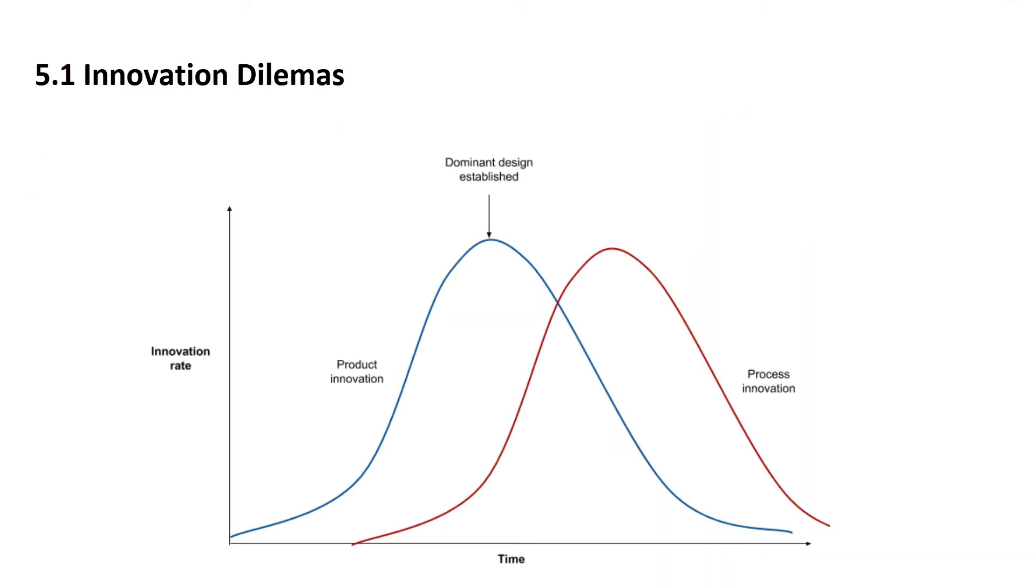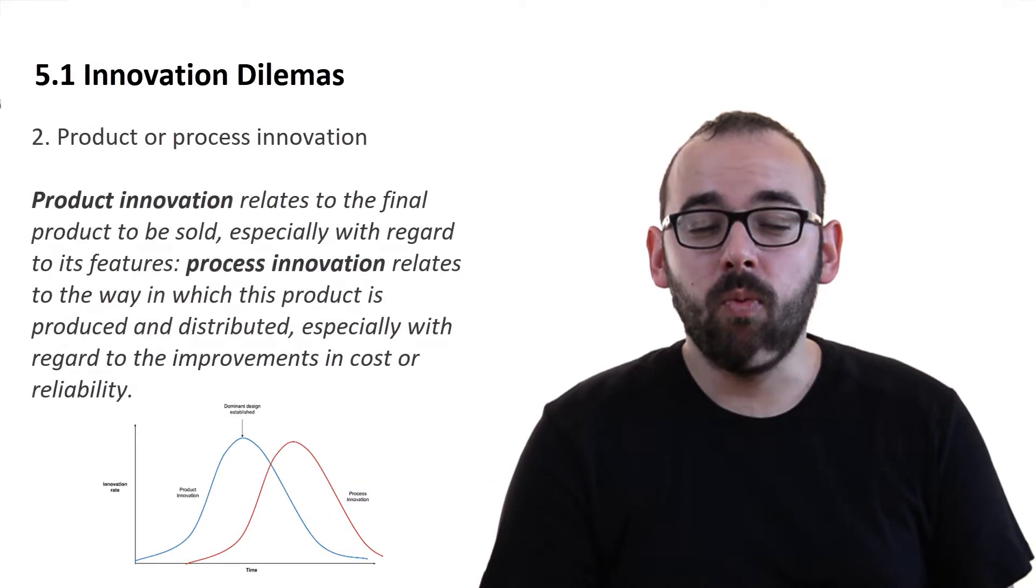On this picture, we have a representation of how markets mature. On the horizontal axis we have time and on the vertical axis we have innovation rate. Inside this plot we have two curves. Blue one represents product innovation and red one process innovation. Product innovation comes first and once dominant design is established, process innovation starts to emerge while product innovation declines.